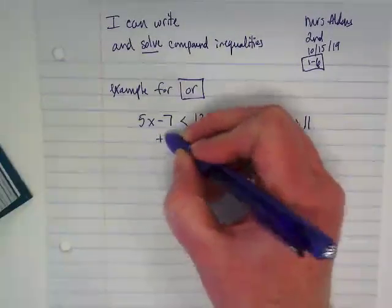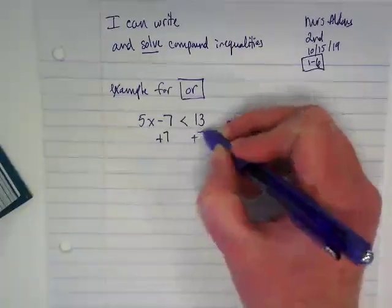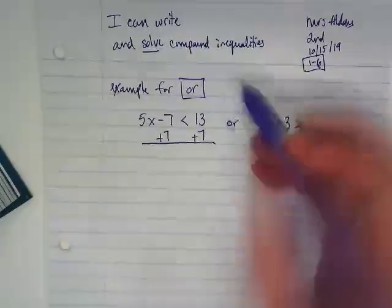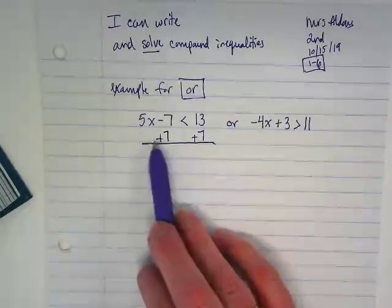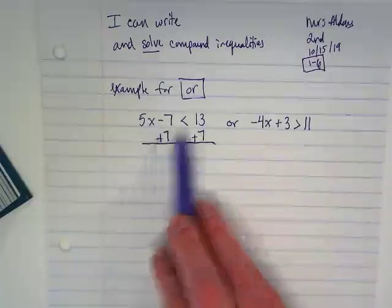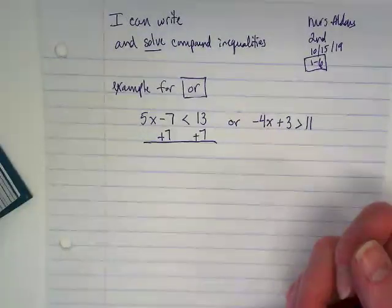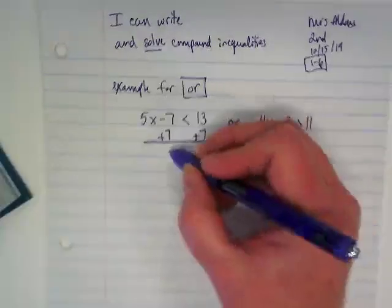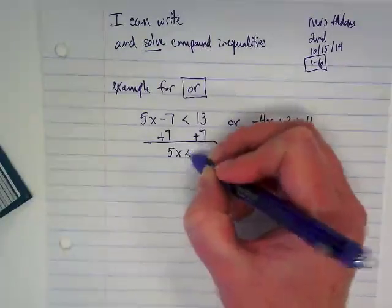So like I said, we're going to get rid of the 7 first. Because this is pretty simplified, we have an x here, constant, constant, so this is a point where we want to get the constants together.